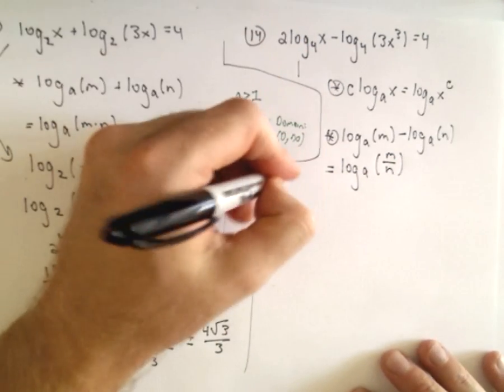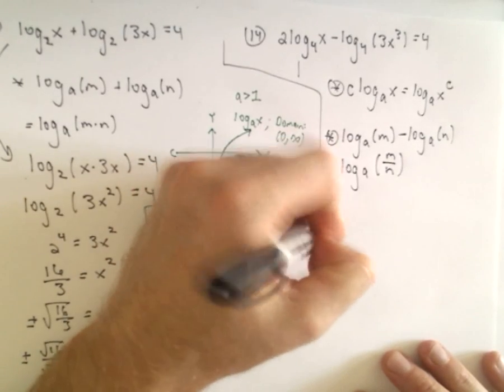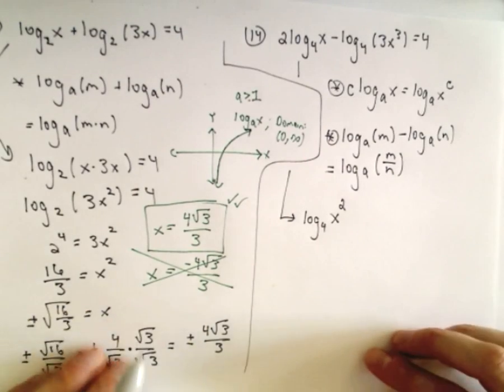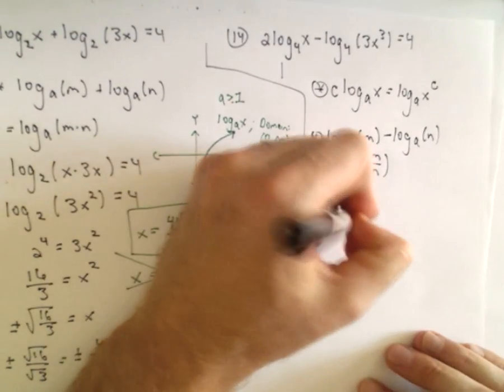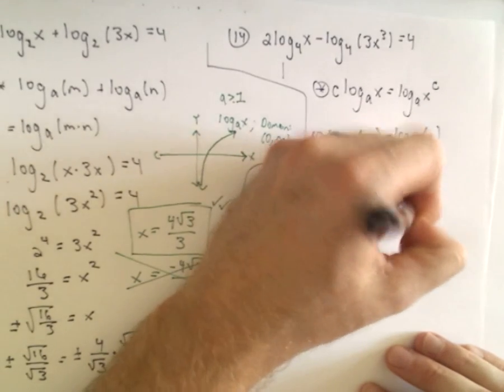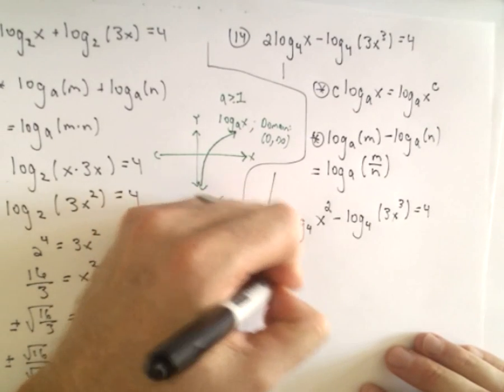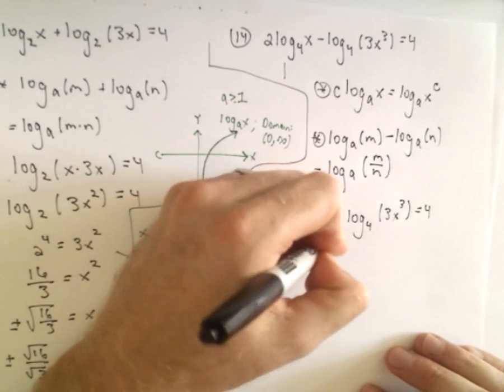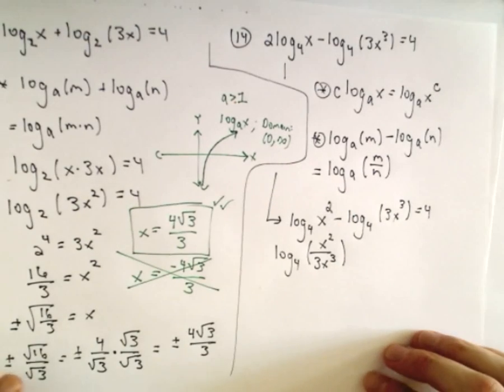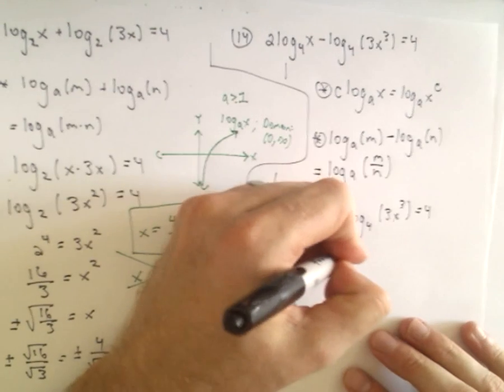Okay, so the first thing I'm going to do, just like I said, I'm going to put that coefficient upstairs as an exponent. So we'll have log base 4 of x squared. I'm not going to do anything with the second term. So now I can rewrite this using division. So I'm going to have log base 4 of x squared over 3x to the third equals 4.